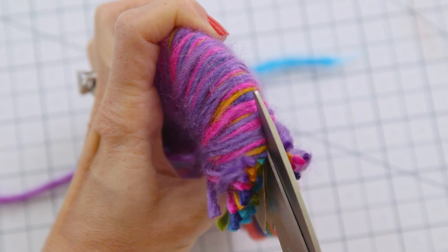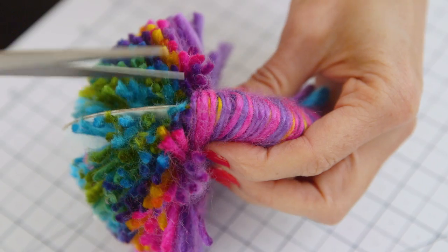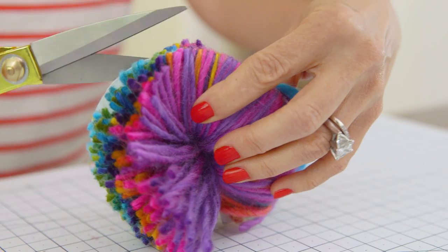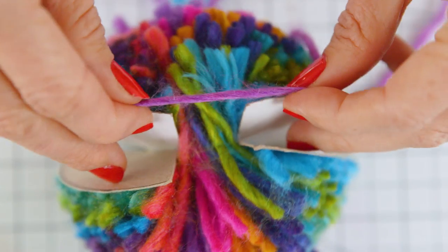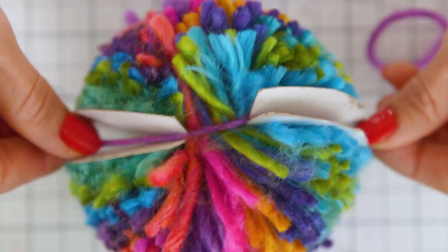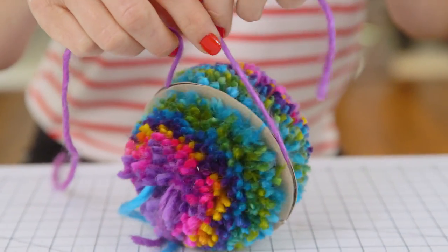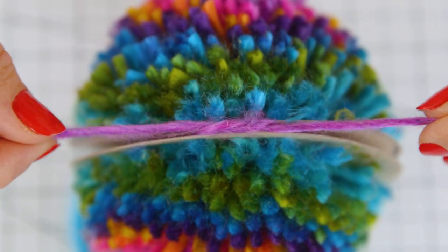Now we're going to take our scissors and slide them between the two pieces of cardboard and begin cutting all the way around. Take an additional piece of yarn and wrap it around the middle of the frame and then pull it nice and tight and secure it with two knots.